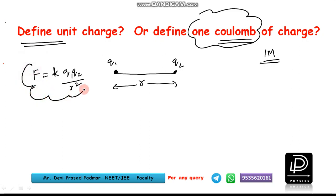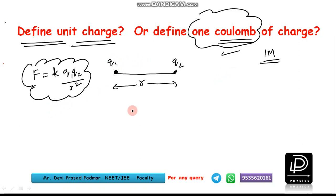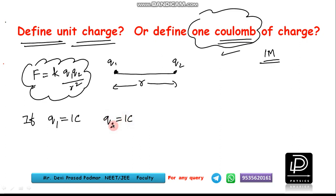I will write it in a diagram. Q1 and Q2 are the two charges separated by distance r, and the force between them is F. Now using this expression we can define unit charge. Consider q1 and q2 as unity — that means q1 = 1 coulomb and q2 = 1 coulomb. Both are equal and similar charges, each of +1 coulomb.